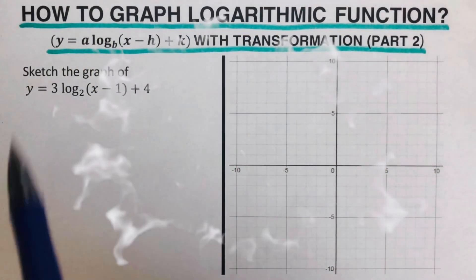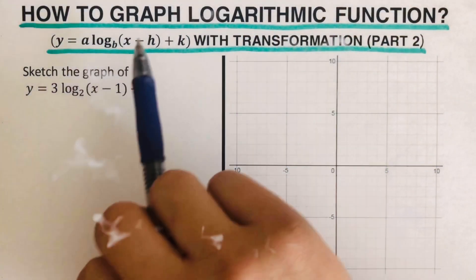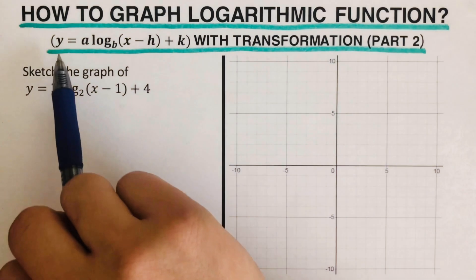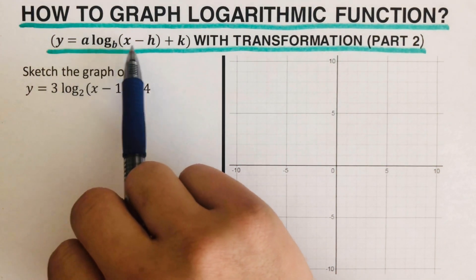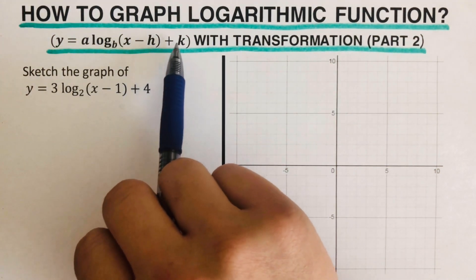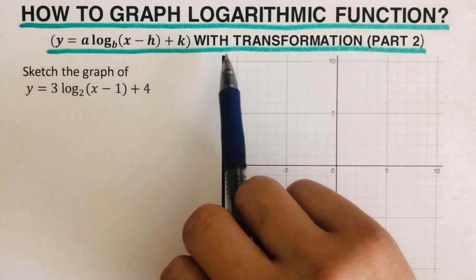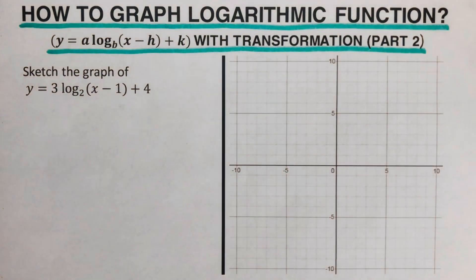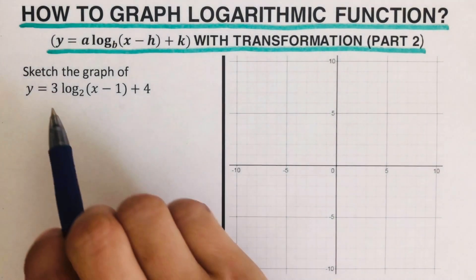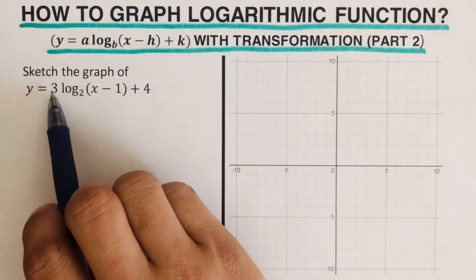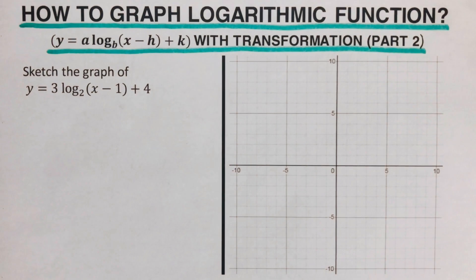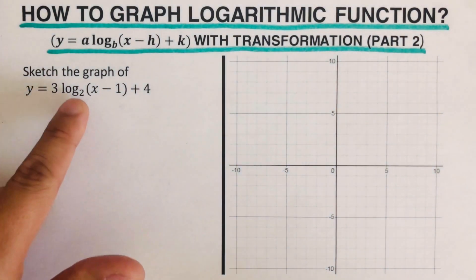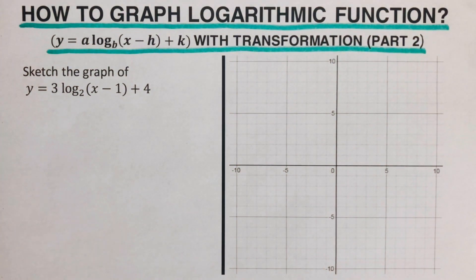Hello everyone. In this video we are going to graph logarithmic functions of the form y equals a times log base b of (x minus h) plus k, with transformations. This is the second part — I will put the link to the first part in the description box below. In this part, the value of a is not equal to one. Before we move into the example, let's have a review on the basics of logarithmic functions.